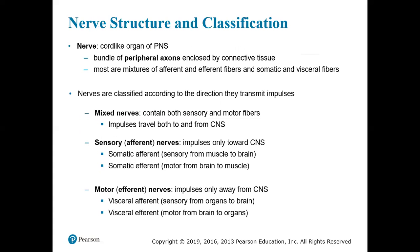The way that we classify nerves — we touched on this already, but we're going to go into it a little better. Remember that a nerve is a cord-like organ; it's a bundle of axons enclosed by connective tissue. Most nerves within the PNS will be a mixture of both afferents, bringing information into the central nervous system, and efferent fibers giving direction, and somatic and visceral. Nerves are classified according to the direction that they transmit the impulse.